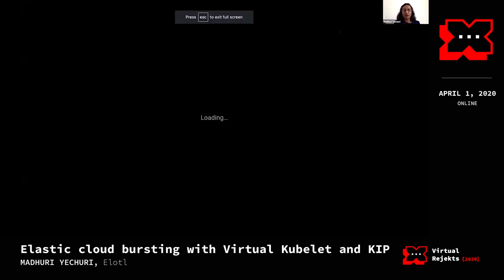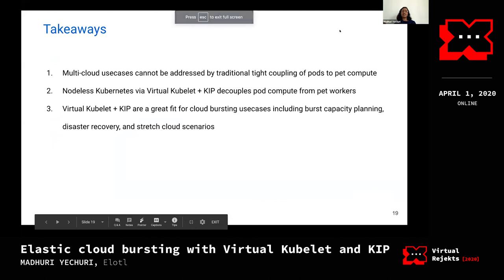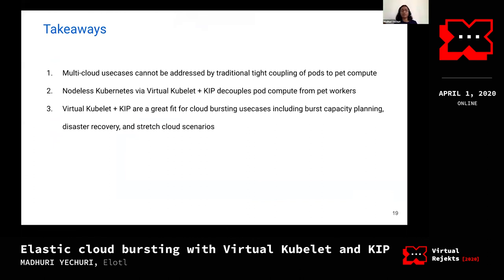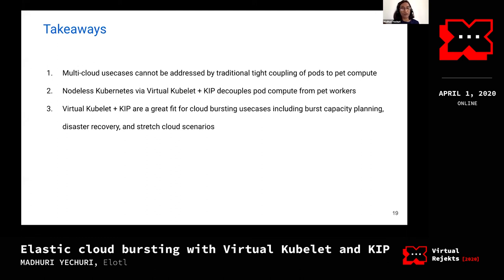A couple of takeaways: multi-cloud use cases cannot be addressed by the traditional tight coupling of pods to pet compute worker nodes, because you're relying on many assumptions about the worker nodes in the traditional single-siloed cloud vendor use case. Nodeless via virtual Kubelet and KIP decouples pod compute from your worker node, and the flexibility that comes with it is a great fit for cloud bursting use cases — including burst capacity planning, disaster recovery, and stretch cloud scenarios.